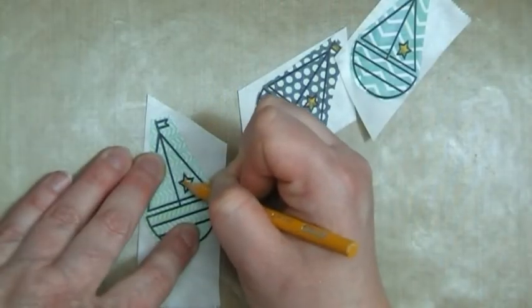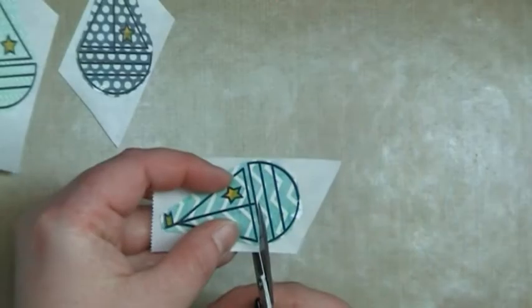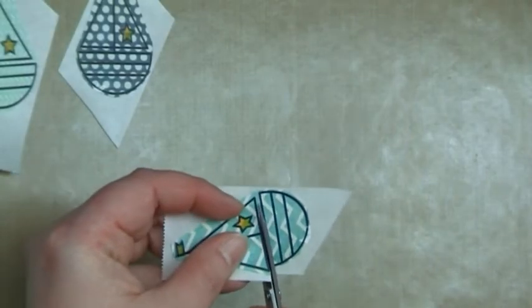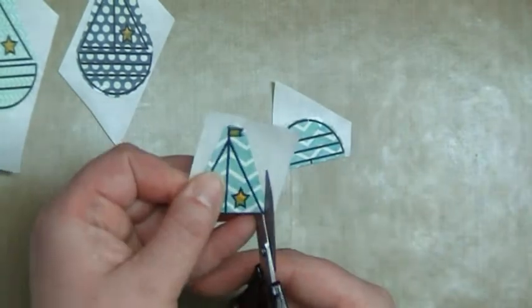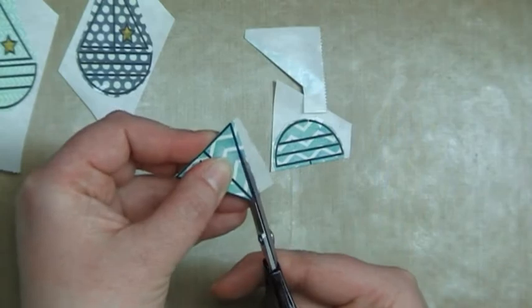For the next part, I'm just going to quickly color in the star using a Prismacolor pencil, and then I'll trim out all of these pieces. I'll only show you trimming one of them, but I will do the same thing for all of them.